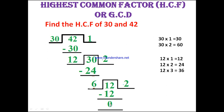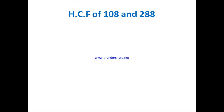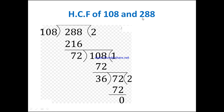We received remainder 0, so the solution is the last divisor. Looking at the steps: 30, 12, 6 — the last divisor is 6. So the HCF of 30 and 42 is 6.